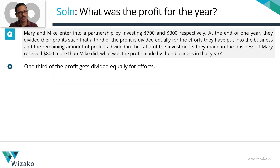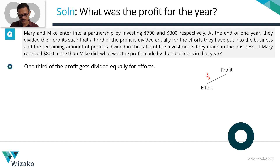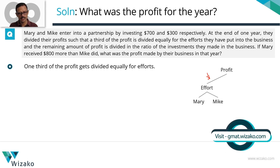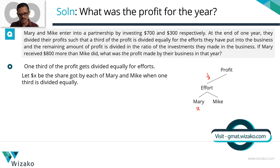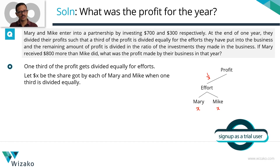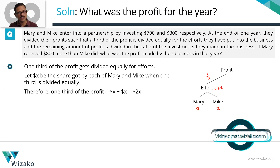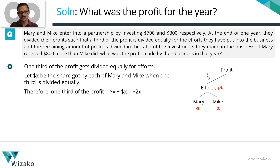One third of the profit gets divided equally for their efforts. This part gets divided equally between Mary and Mike. So if Mary gets x dollars, Mike will also get x dollars. On account of effort, what they divided together is x plus x, which equals 2x dollars. This 2x accounts for one third of the profit.